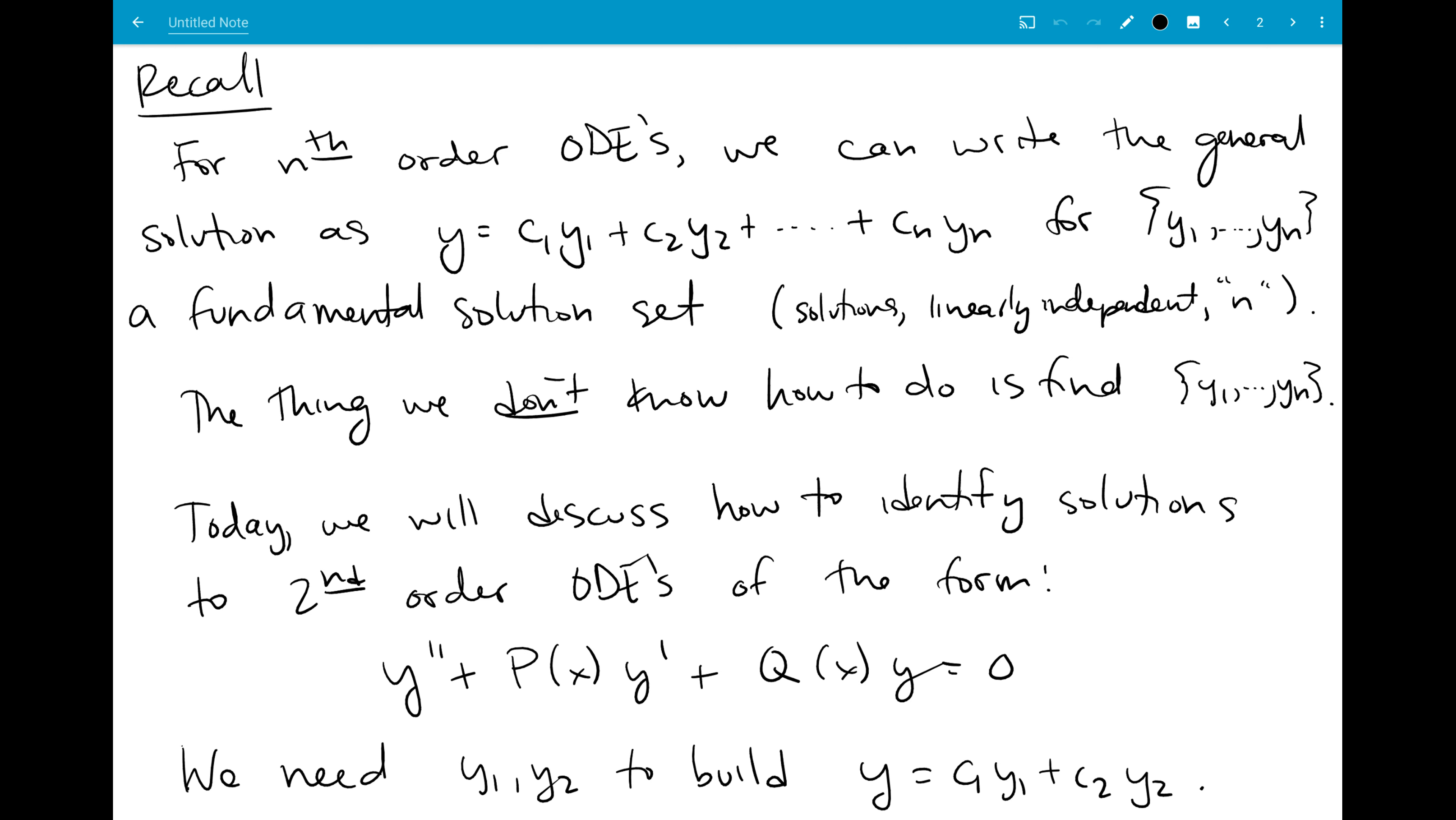So we sort of got ourselves in the frame of mind to be thinking about building solutions based on how we learned solutions look for nth order differential equations in this section. And we said we'd look at the specific second order differential equation, y double prime plus p of x y prime plus q of x times y equal to zero. And we know we need two solutions in order to find the general solution that's a linear combination of those things.